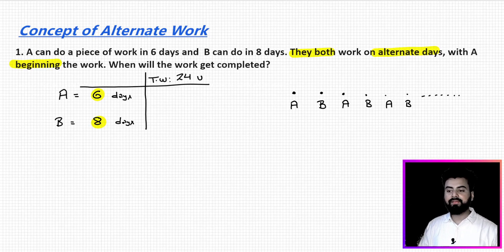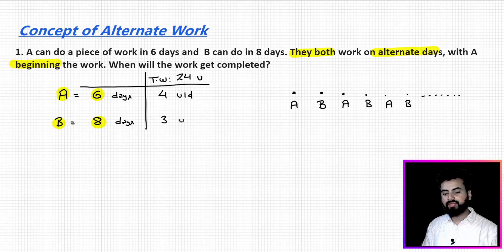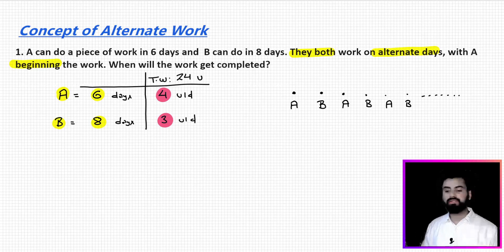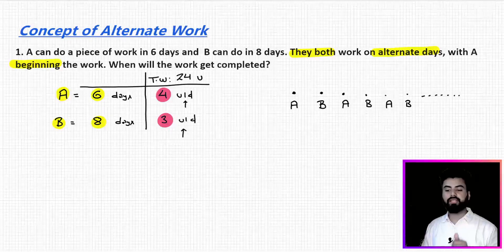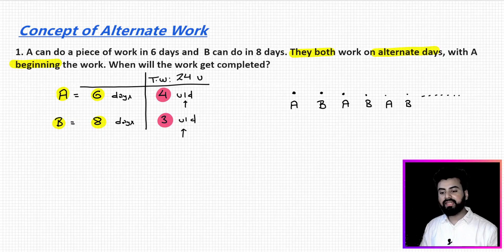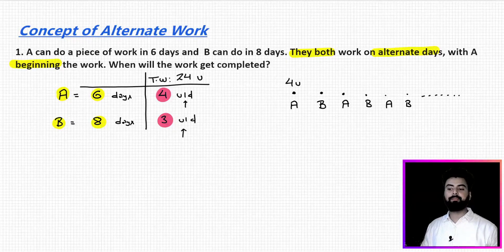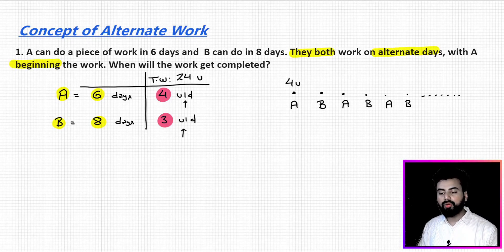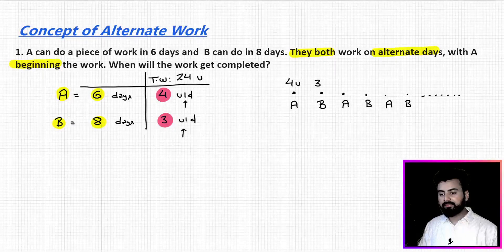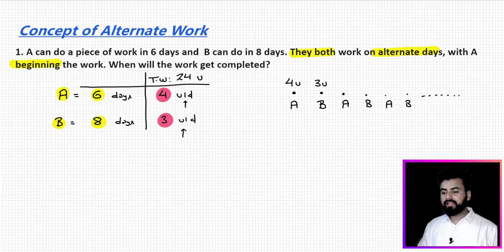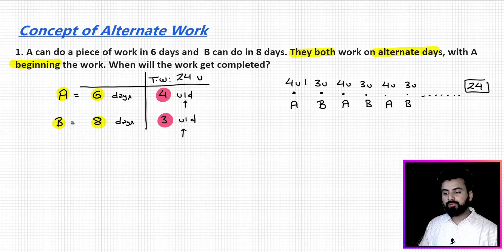Using this, we calculate efficiency for A and B. 24 divided by 6 gives 4 units per day for A, and 24 divided by 8 gives 3 units per day for B. Efficiency tells us how much work a person can do per day. So on day 1, A does 4 units; on day 2, B does 3 units. They keep repeating this pattern — 4 units, 3 units — until 24 units of work is completed.